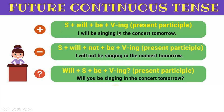For the affirmative sentence, write subject plus 'will be' plus verb plus '-ing.' Example: 'I will be singing in the concert tomorrow' — 'I' is subject, 'will be,' and 'singing' is verb plus '-ing.' For negative, add 'not' after 'will': 'I will not be singing in the concert tomorrow.' Remember to place 'not' after the helping verb. For interrogative, 'will' comes first: 'Will you be singing in the concert tomorrow?'